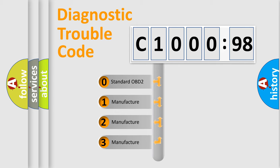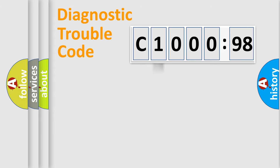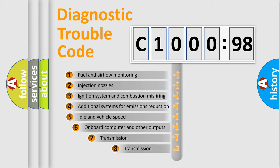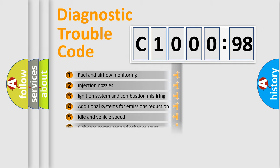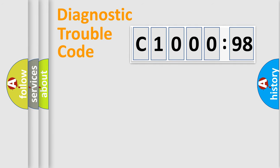If the second character is expressed as zero, it is a standardized error. In the case of numbers 1, 2, or 3, it is a manufacturer-specific error. The third character specifies a subset of errors. The distribution shown is valid only for the standardized DTC code. Only the last two characters define the specific fault of the group.